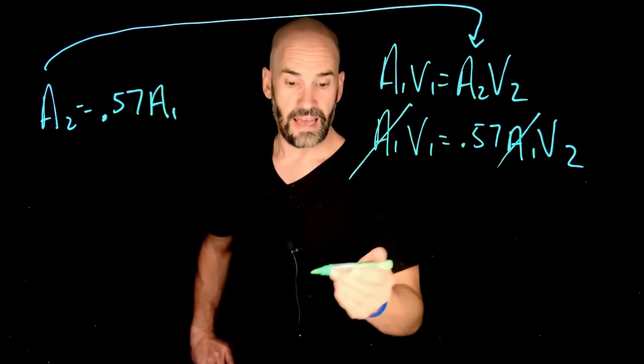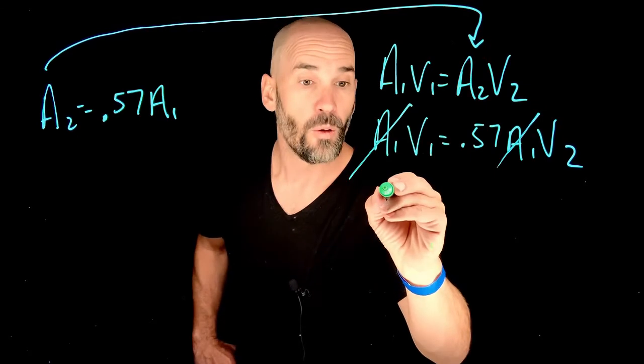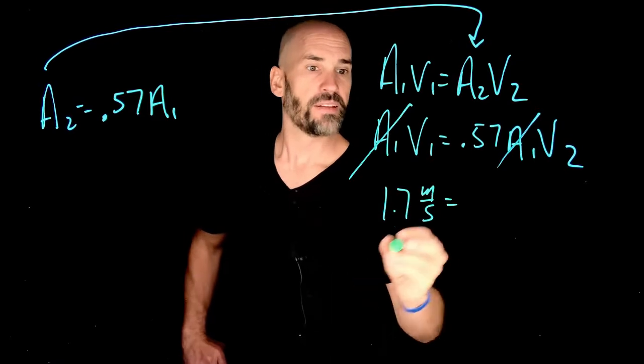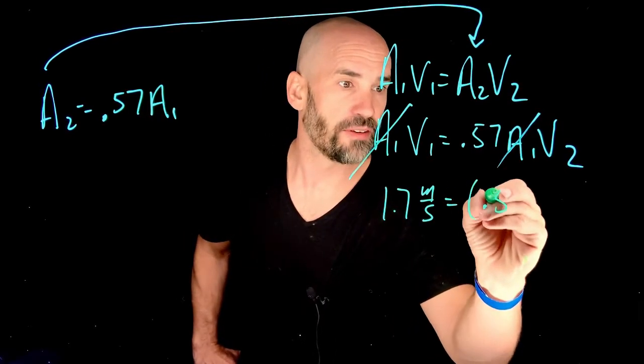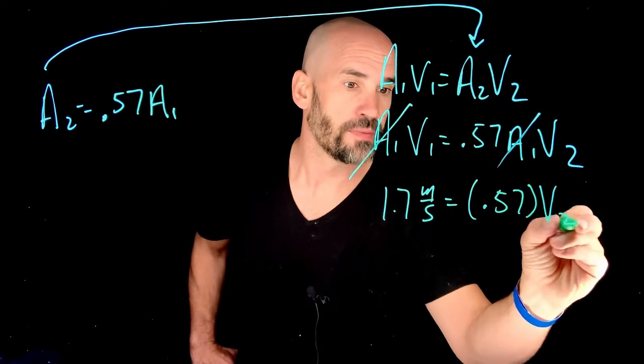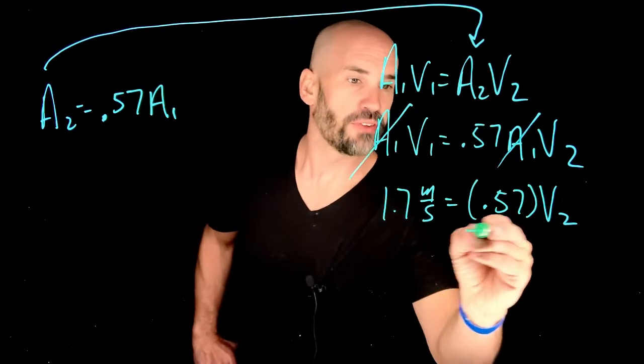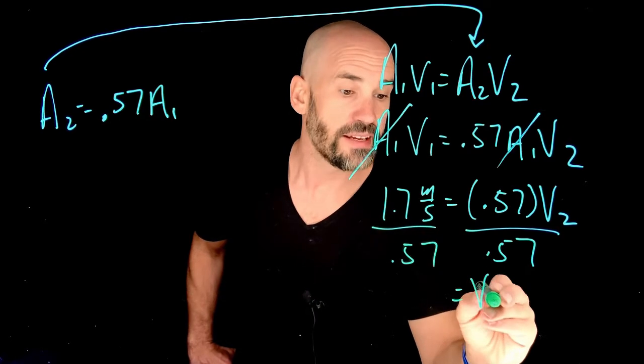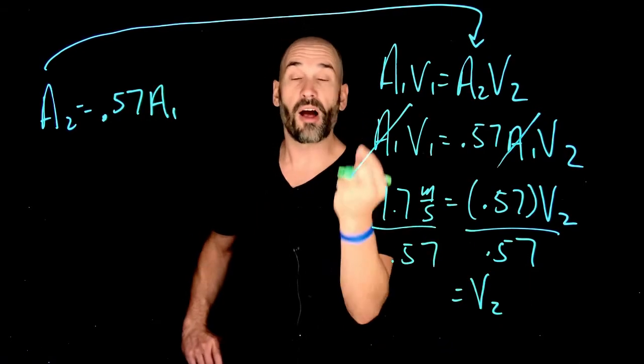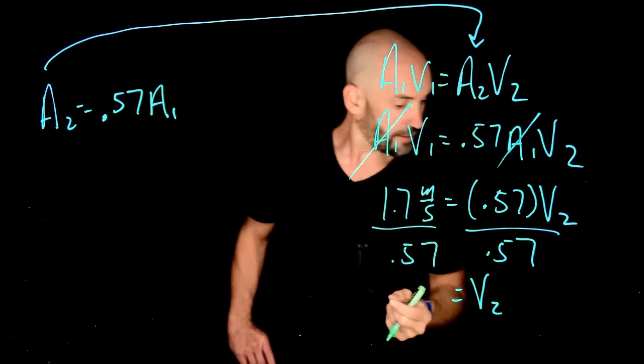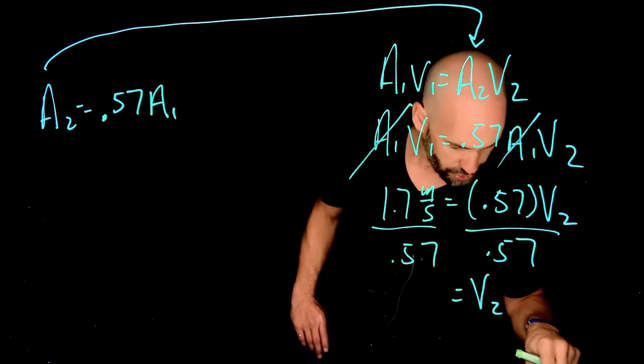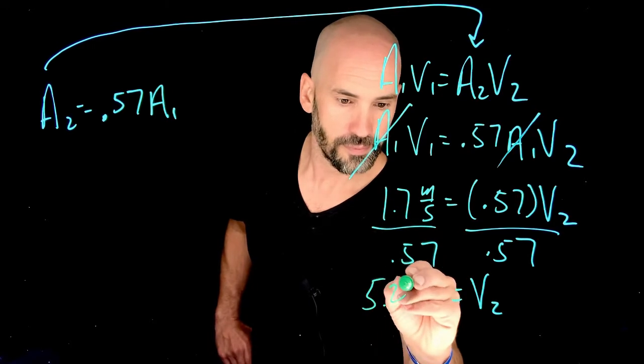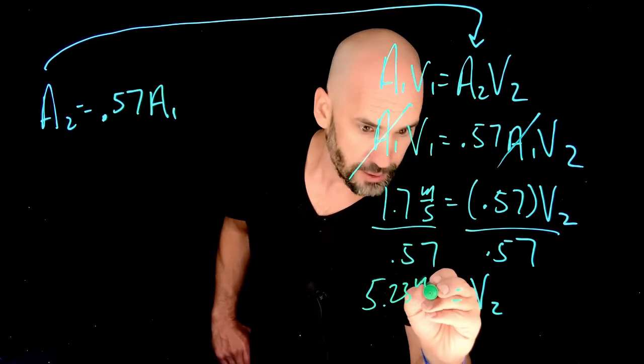V1, as it says, like in a normal standard flowing artery, it's going to be 1.7 meters per second, times 0.57 V2. Divide both sides by 0.57. I get that the new velocity in this partially clogged artery is going to be 5.23 meters per second.